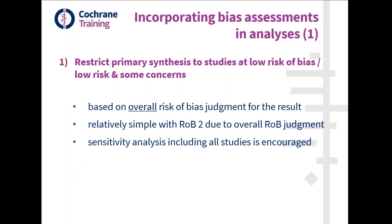Option one: restrict the analysis to studies at low overall risk of bias, or combine low risk and some concerns. How strict you choose to be will probably depend on how much evidence is available at low risk of bias — it's a decision for the author team and might be made at protocol stage. This is a relatively simple approach with RoB2 since we now have the overall risk of bias judgment, which didn't exist in the original Cochrane tool. In addition to the primary analysis restricted to stronger studies, a sensitivity analysis should also be done to examine the impact of that restriction.